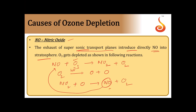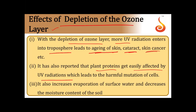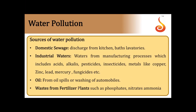The effects of ozone layer depletion: more UV radiation enters the troposphere, leading to aging of skin, cataract, and skin cancer. Plants' proteins are easily affected by UV radiation, leading to harmful mutation of cells. It also increases evaporation of surface water and decreases moisture content in the soil.